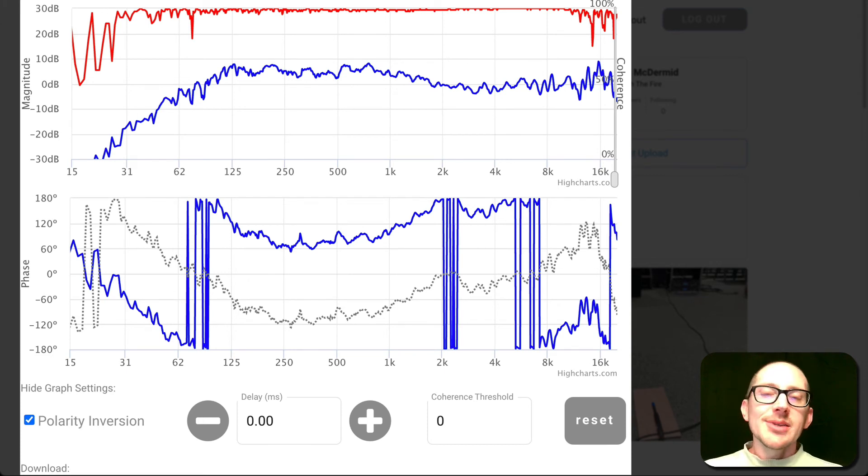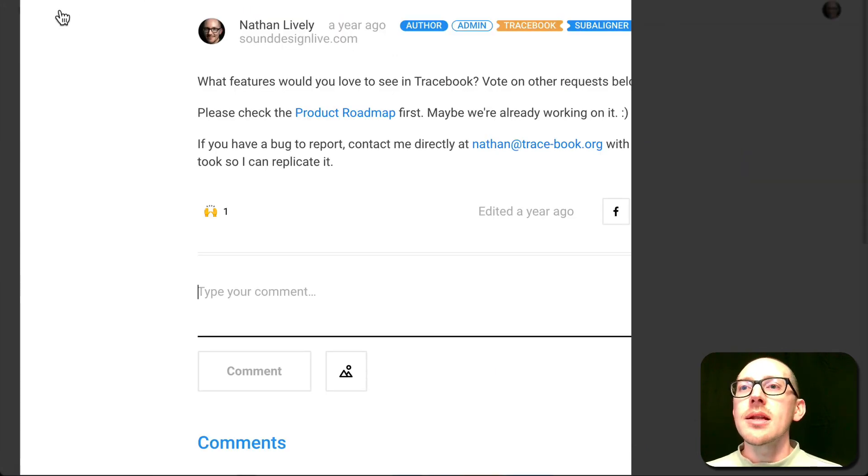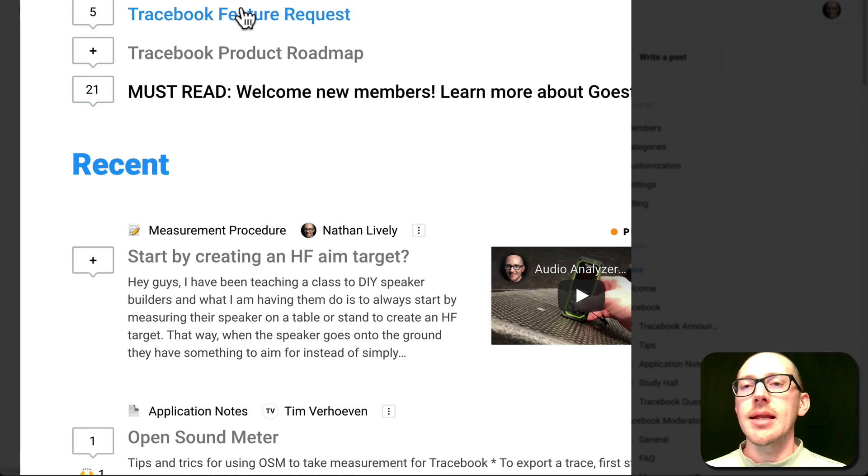If you would like to make some suggestions about the future of Tracebook, you can do that in the forum. Whenever you're on tracebook.org, there's a link at the top navigation bar that says forum. When you get over to the forum, you'll see the second item down is Tracebook feature request.